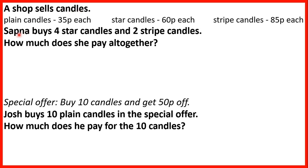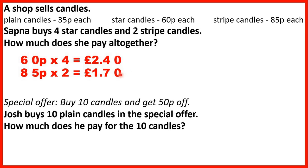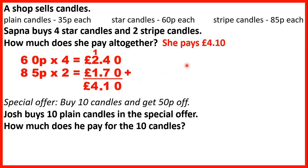A shop sells candles. Sapna buys four star candles and two stripe candles. How much does she pay altogether? We can find the cost of four star candles, then the cost of two stripe candles, and add those together. Star candles are 60p each and she buys four, so 60p times 4 is £2.40. Stripe candles cost 85p each and she buys two, so 85p times 2 is £1.70. So she spends £2.40 plus £1.70, which comes to £4.10.